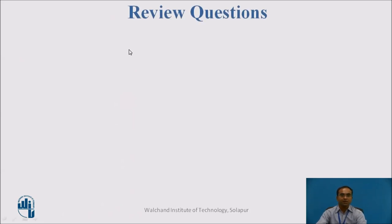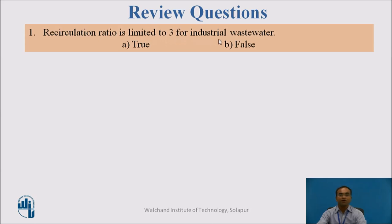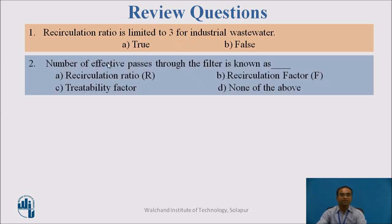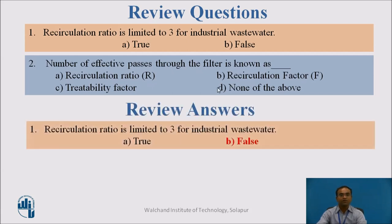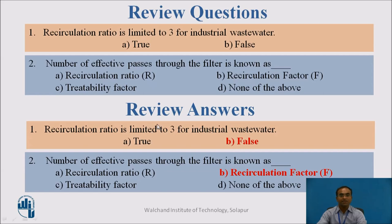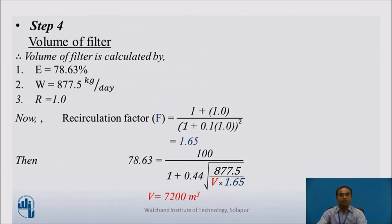Review question: The recirculation ratio is limited to 3 for industrial wastewater — true or false? The number of effective passes through the filter is known as the recirculation factor. Applying R = 1.0, the recirculation factor F = 1.65. Substituting F into the NRC formula gives the total volume = 7,200 cubic meters.